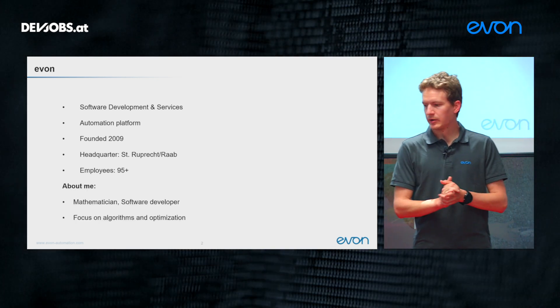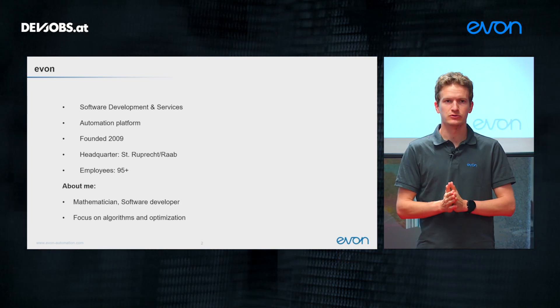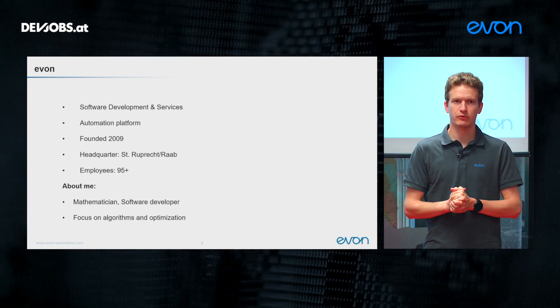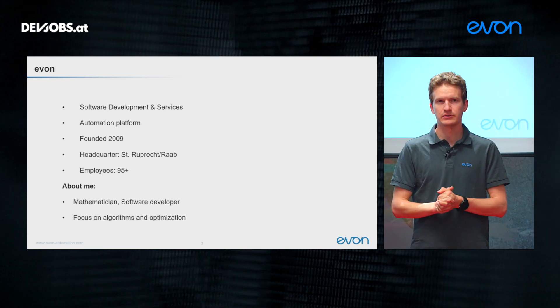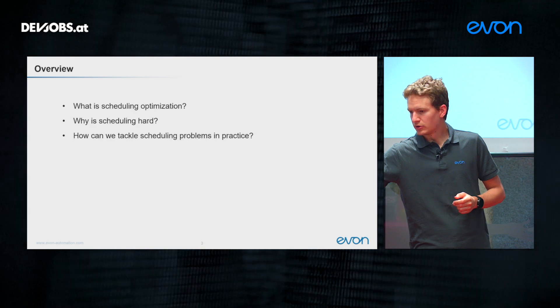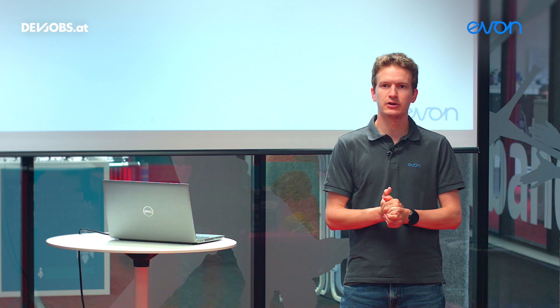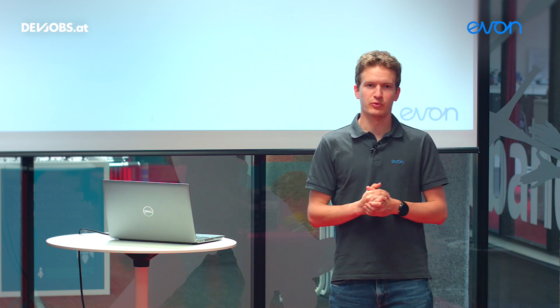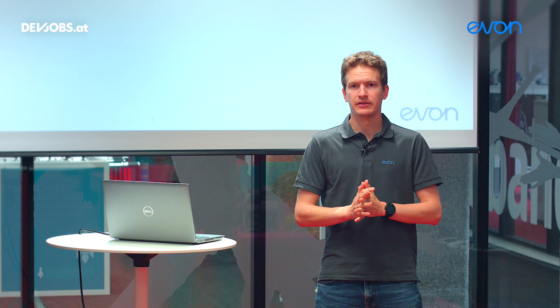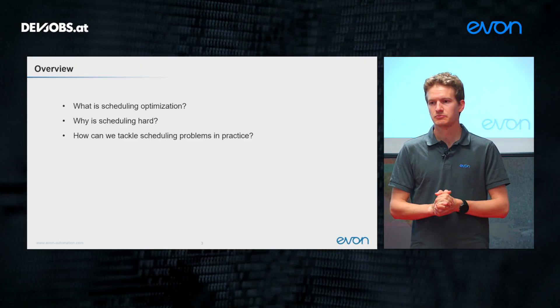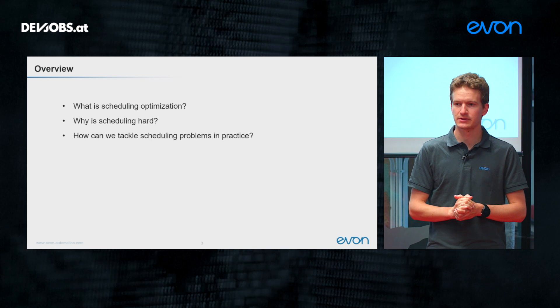About me: I'm a mathematician and software developer at AVON with a strong focus on algorithmic and optimization problems, and one of these optimization problems we work on a lot is scheduling. In this talk, I want to give a short overview of scheduling, guided by three questions: what is scheduling and scheduling optimization, why is scheduling typically a hard problem, and how can we tackle scheduling problems and find reasonably good solutions.